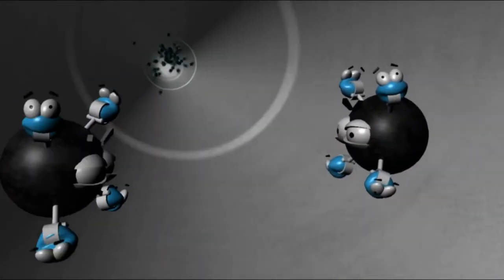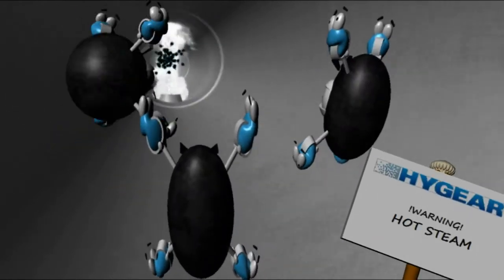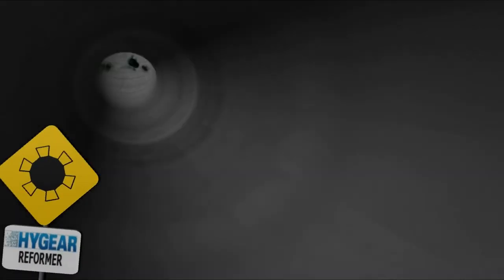The methane proceeds and water is added in the form of steam. This steam is produced with the exhaust heat of the process. Next, the molecules are fed into the reformer.